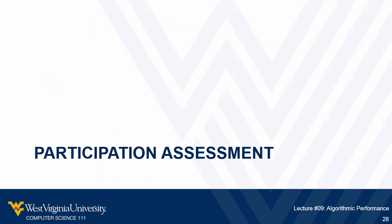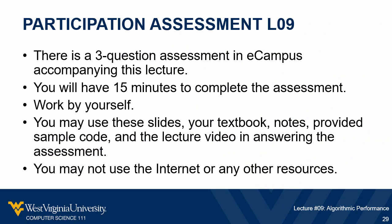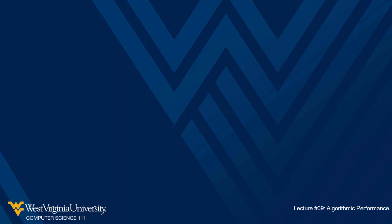This lecture has an accompanying participation assessment in eCampus. There are three questions and you'll have 15 minutes to complete it. You need to work by yourself. You may use any of the course resources I've provided — the slides, the lecture video, and sample code — as well as your textbook and any notes you've taken. You're not allowed to use the internet or anything else. That's where we're going to end things for this initial look at performance of different types of algorithms. We'll be revisiting this subject throughout the rest of the semester, and you'll learn a lot more about it when you take CS320. If you have any questions, please join the Q&A session or send me an email. Thanks and have a great day.